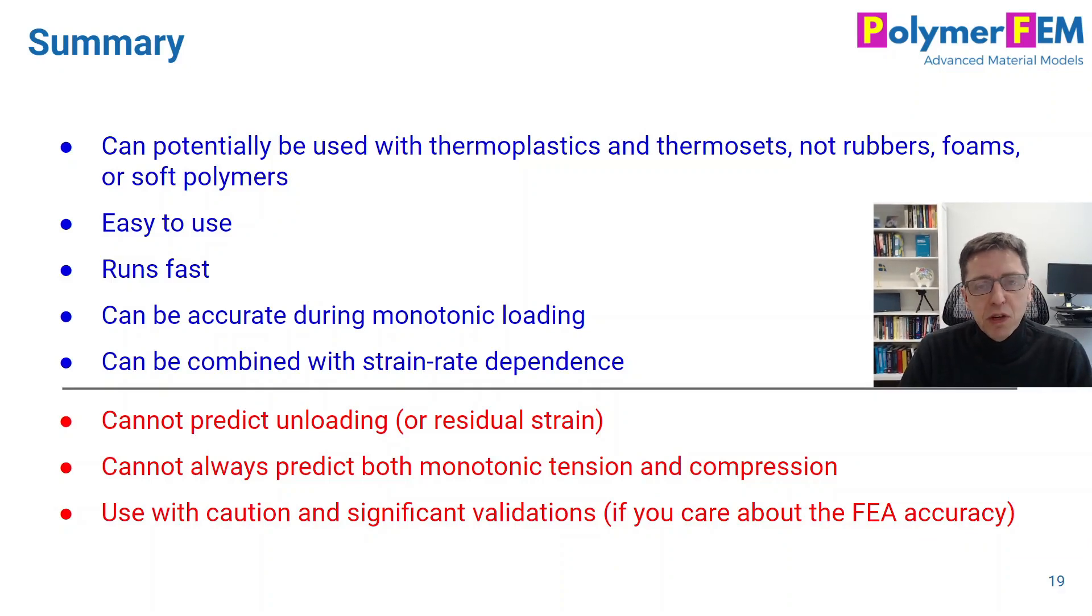So to summarize, if you want to use an isotropic hardening plasticity model, you really should only use it for thermoplastics or perhaps thermosets. Don't ever use it for rubbers, foams, or anything soft. That's not a good choice. But the good news about this type of plasticity model is it's easy to use. It runs fast. And it can be accurate in some cases during monotonic loading. And it can also be combined with strain-rate dependence, which is something I didn't really talk about here. The challenges are that it is not very good at predicting unloading, the residual strain, or cyclic response. You can't even predict tension and compression in monotonic loading in many cases because of differences between the two.